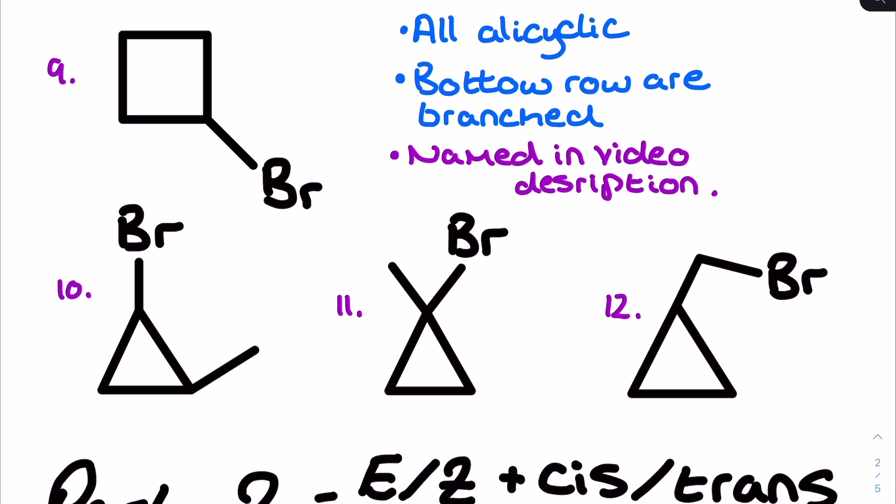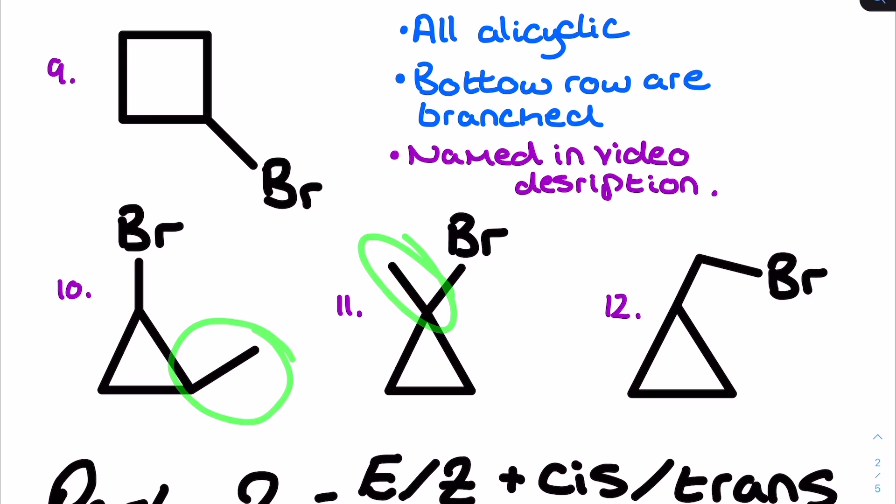What about the alicyclics? These cyclic alkanes are correct and valid structural isomers of the alkene — we can't put a double bond in here because otherwise we haven't got the right number of hydrogens. Draw out the displayed formula if you're unsure and you'll see they all have the same molecular formula. I started with bromocyclobutane, then shortened the alicyclic section to cyclopropane, introduced a branch, moved the branch around, and this final one — number 12 — I wouldn't expect you to name at A-level, but I have put the name in the video description.